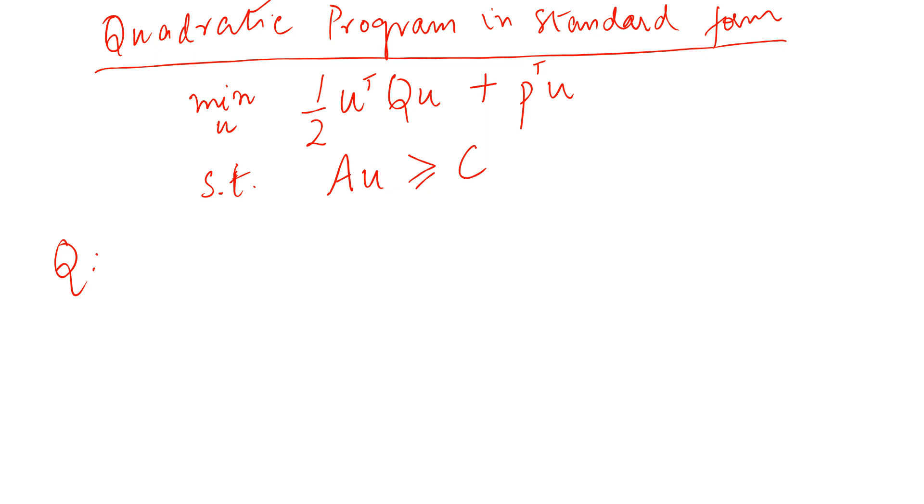Well, let me write it down. So Q is a matrix. It's a Q by Q matrix. And A is also a matrix. So A is a N by Q matrix in the constraint. And here you see that there is a linear term and then there is this quadratic term.